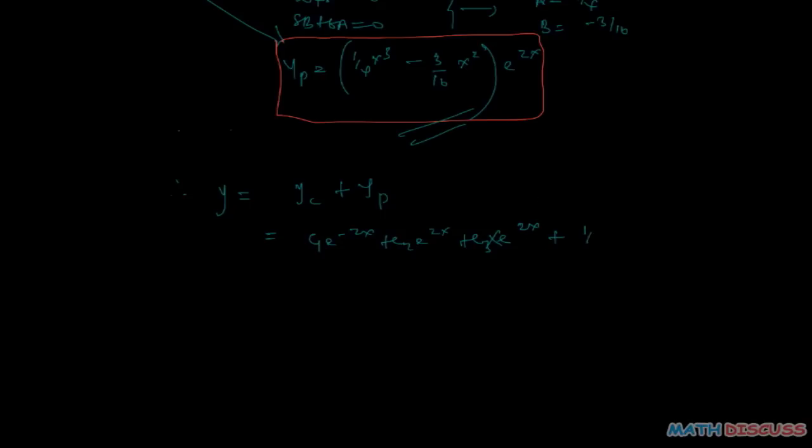Then plus the particular solution, which is what we had here, that's going to be 1 over 4 x cubed minus 3 over 16 x squared e to the power 2x. So that is the general solution of the differential equation, the non-homogeneous differential equation that we're given.